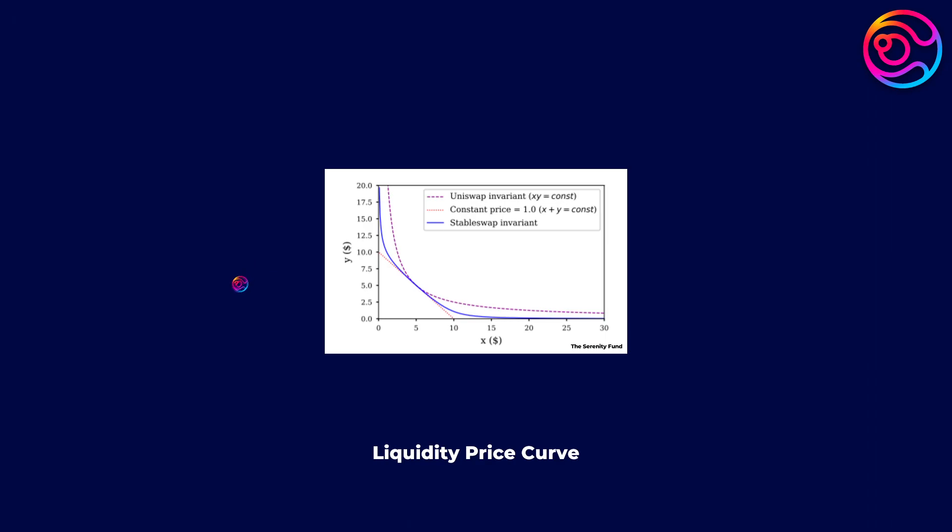However, because liquidity is distributed evenly across the entire price curve, the same liquidity between $0.99 and $1.01 is also present between $0.01 and $0.03. But that portion of the liquidity pool is essentially never used, because DAI and USDC simply never trade there, unless one of the stablecoins were to depeg.